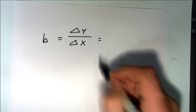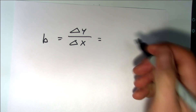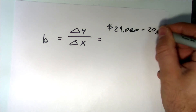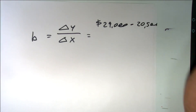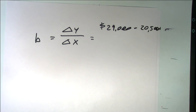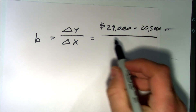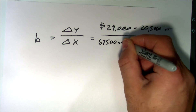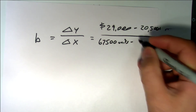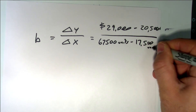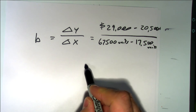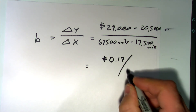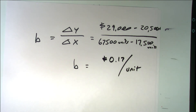The first thing we're going to solve for is B, which is the variable cost. That equals the change in y over the change in x of the high and low point. So the change in y is $29,000 minus $20,500, divided by the change in x — 67,500 units minus 17,500 units. If you compute that out, it comes out to 17 cents a unit. That is the B in our line.